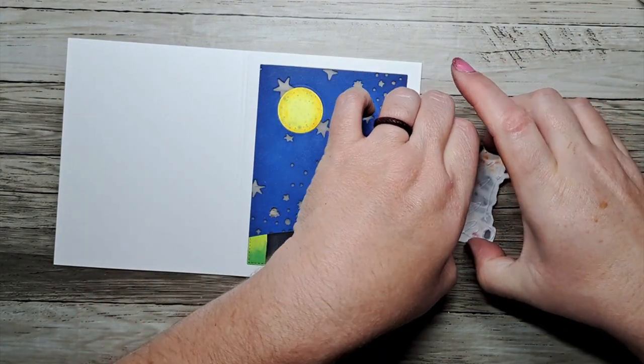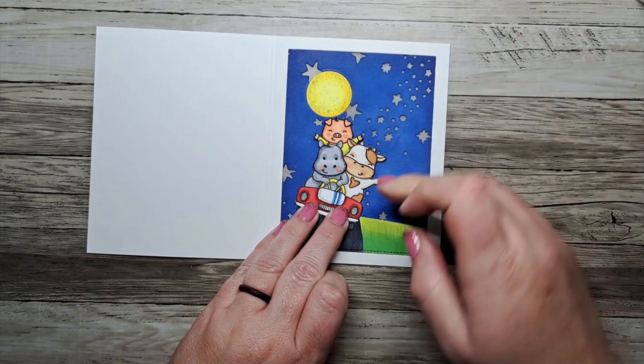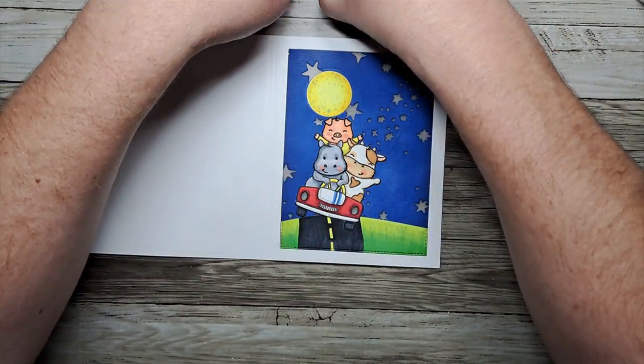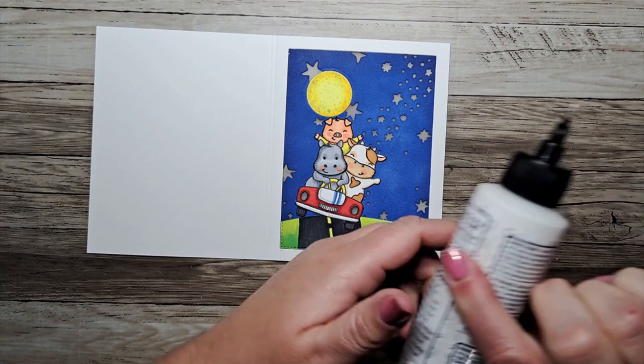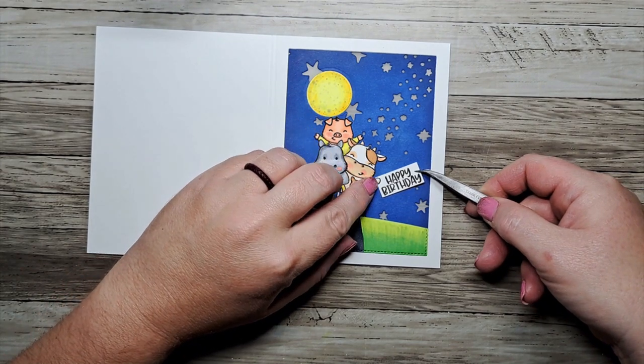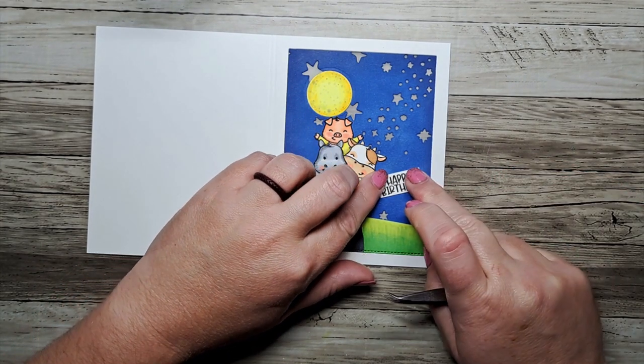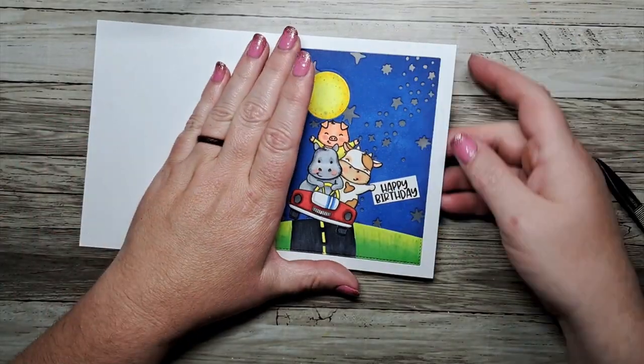We're going to glue in our car and again that die cut background with the stars is also backed with vellum so it is transparent but not too transparent. We're going to add in that car and we're going to put it over top of those two holes for our headlights. Now we have a cute little greeting that we're going to use as our switch to turn our lights on and off and we're just going to put that in the little cow's hand. So the recipient is going to press that sentiment to activate the lights.